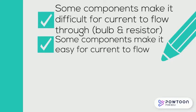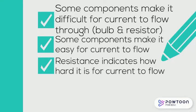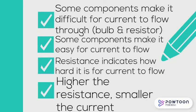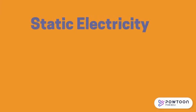Some components make it difficult for current to flow through, such as bulbs and resistors. Some components make it easy for current to flow through. Resistance indicates how hard it is for the current to flow — the greater the resistance, the smaller the current.